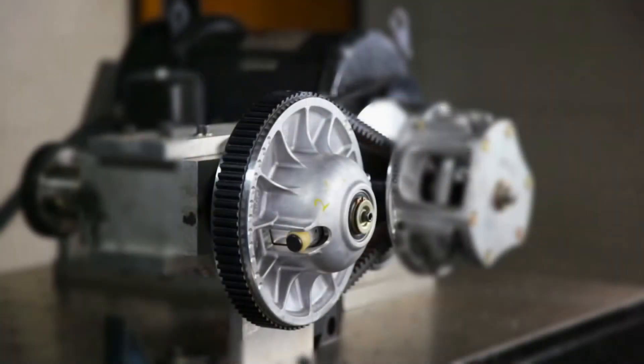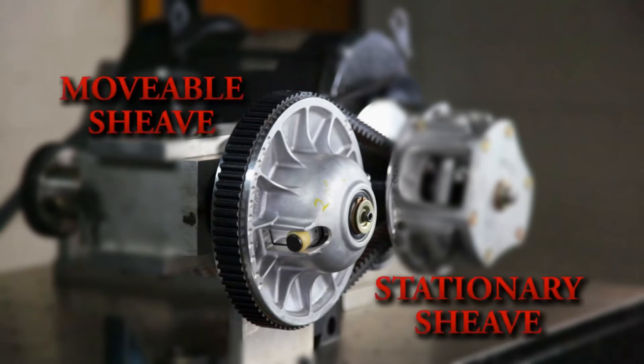The secondary clutch is mounted to the input shaft of the transmission or transaxle. Like the primary clutch, it has a stationary and a movable sheave.